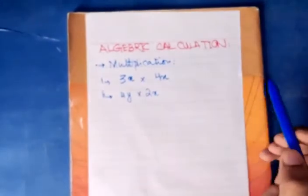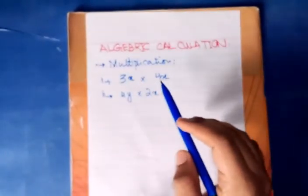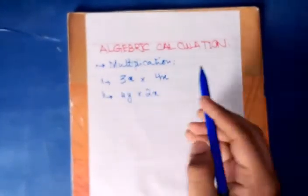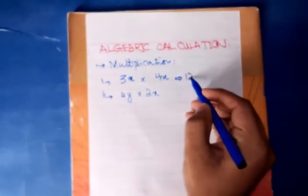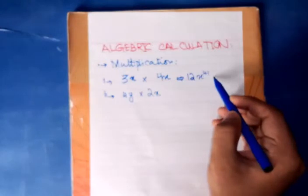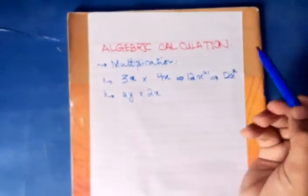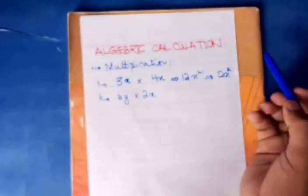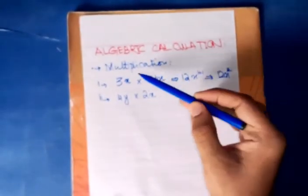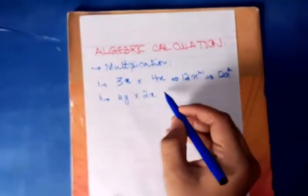If you have same variables, simply you will add the powers of the numbers. If you have 3 times 4, that will be equal to 12, and x times x will be x to the power 1 plus 1, that is 12x square. If you have x square times another x square, I will add this one and this two, and in the answer my power will always be equal to the sum.